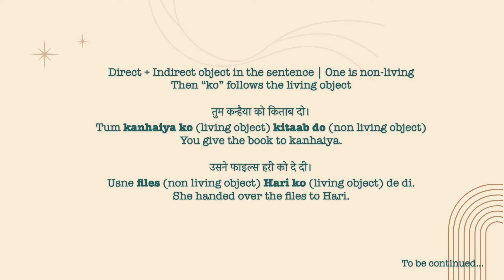When one object is living and the other is non-living, ko is only used with the living object. For example: 'Tum kanhaiya ko kitab do' — You give the book to Kanhaiya. 'Usne files Hari ko de di' — She handed over the files to Hari.